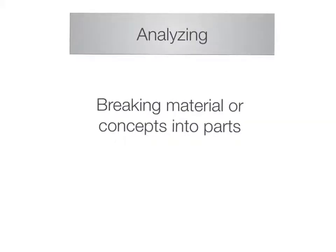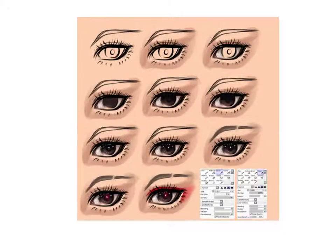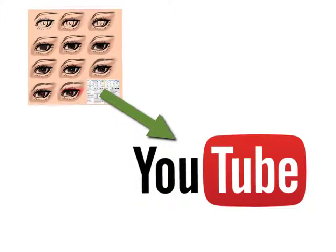The next step is analyzing, which means breaking material or concepts into parts and determining how the parts relate to one another or to an overall structure or purpose. Mental actions include differentiating, organizing, and attributing, as well as distinguishing between components. Students would create an instructional video tutorial on how to achieve a successful photo using one of the elements or principles of design, explaining each step and providing original examples. The videos would then be posted to YouTube for others to utilize.